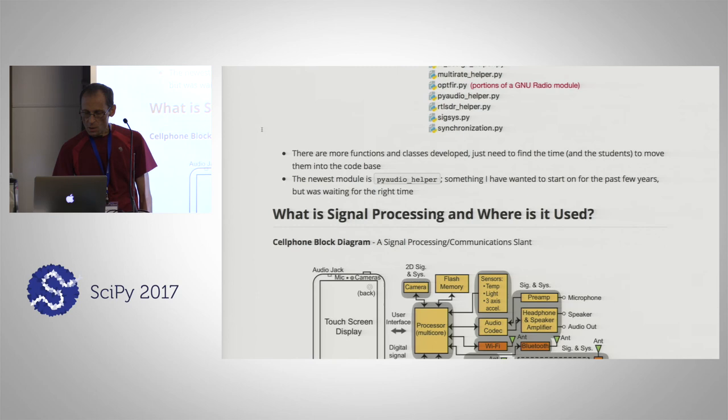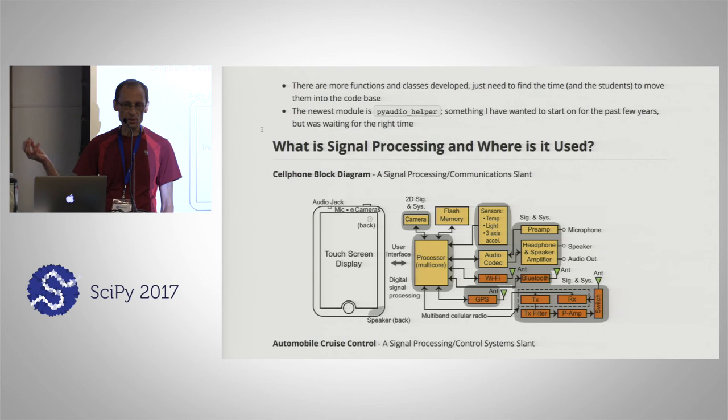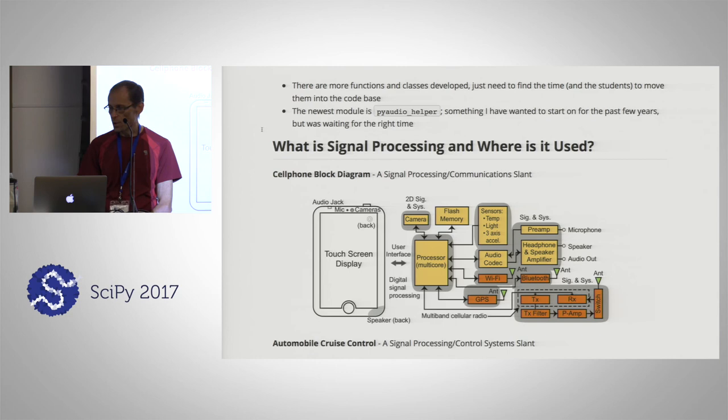In digital communications, synchronization is under the covers. In the beginning when we did communications just with speech, our brains did all the synchronizing — when we hear audio sounds, we automatically interpret them even if a little distorted, because our brains are extremely powerful. Dumb digital communications doesn't know what to do if the bits are scrambled because of not being synchronized properly.